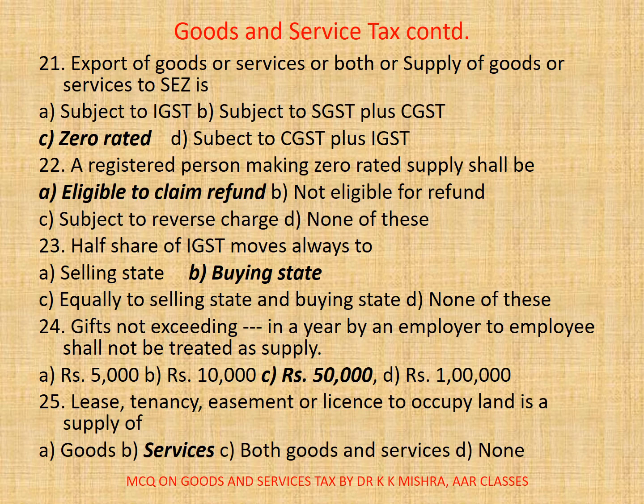Question 24: Gifts not exceeding a limit in a year by an employer to employee shall not be treated as supply. Options are — A. rupees 5,000, B. rupees 10,000, C. rupees 50,000, D. rupees 1,00,000.